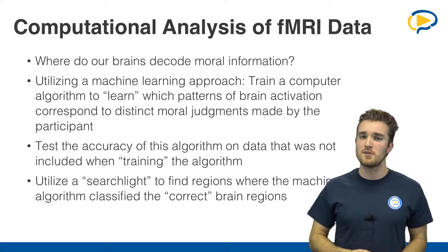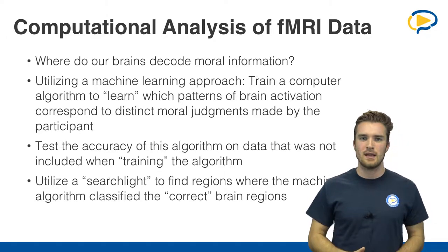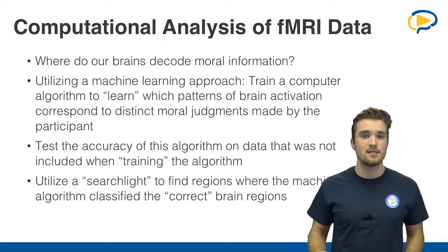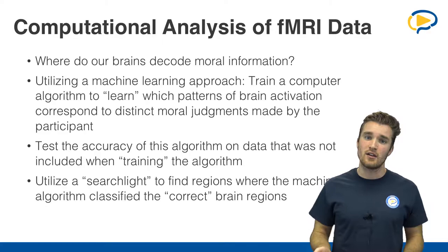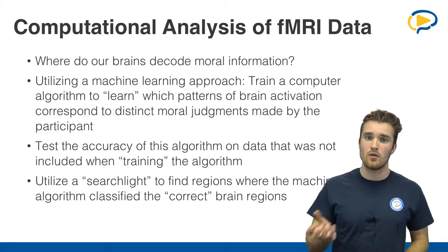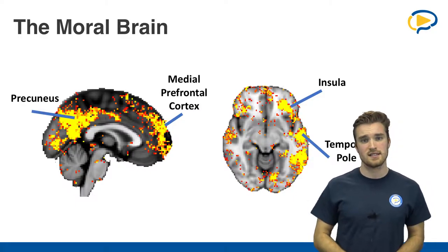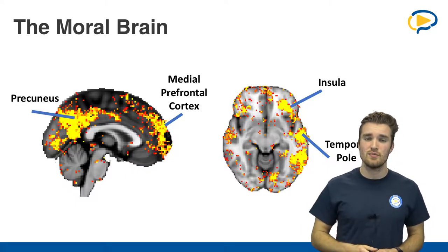Now, where is moral information represented in the brain? What we did is we used what's called a searchlight to look for certain regions of interest — ROIs — in the brain that our classifier classified correctly as morally relevant. If you look at this slide, you can see that the precuneus and the medial prefrontal cortex were especially likely to be activated whenever someone was reading a moral violation. On the right side, you can also see that there was some activation in the insula and in the temporal lobe.